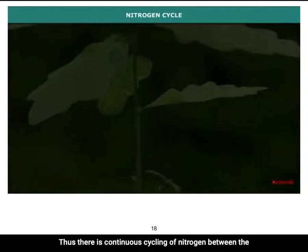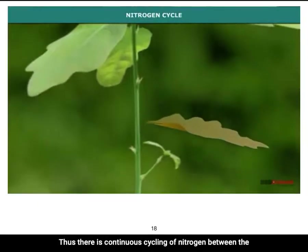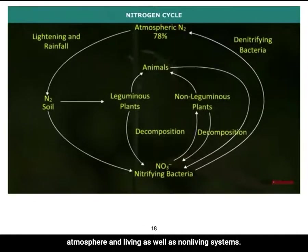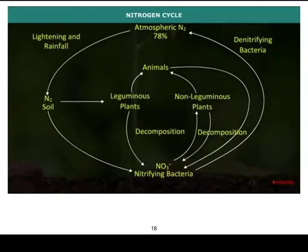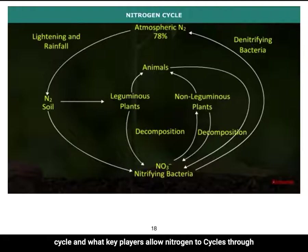Thus, there is continuous cycling of nitrogen between the atmosphere and living as well as non-living systems. Make sure you understand the various parts of the nitrogen cycle and what key players allow nitrogen to cycle through an ecosystem.